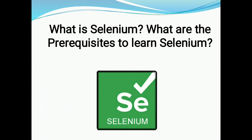Selenium is one of the most widely used open source web user interface automation testing suites. It was originally developed by Jason Huggins in 2004. Selenium supports automation across different browsers, platforms, and programming languages. It can be easily deployed on platforms such as Windows, Linux, Solaris, and Mac, and also supports mobile operating systems like iOS, Windows Mobile, and Android.